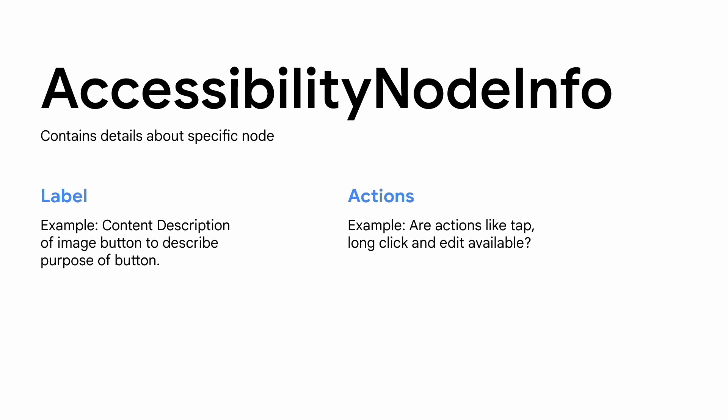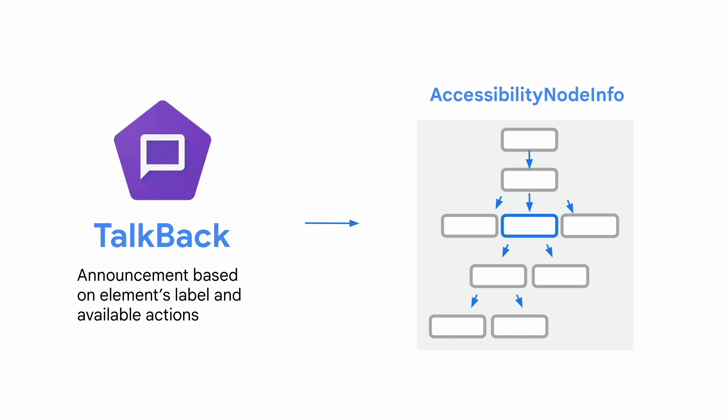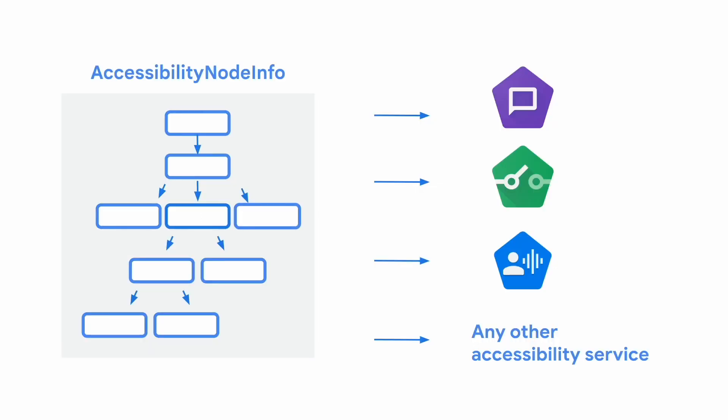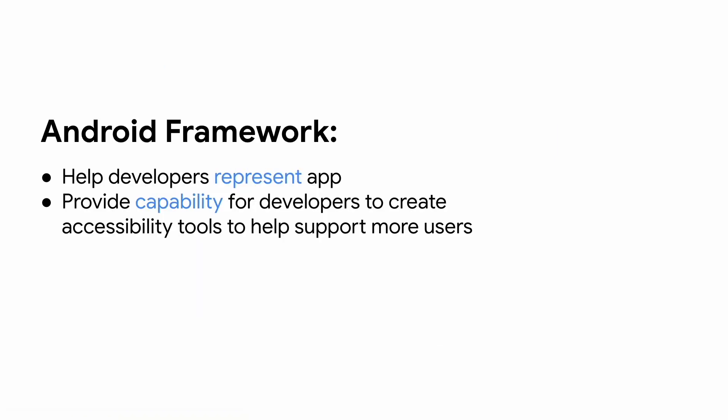You probably have never needed to think about Accessibility Node Info or the properties contained inside it, mostly because these properties are filled in automatically if you're using built-in components. The framework automatically populates the label text field for text elements and certain actions for specific widgets like switches or radio buttons. It's with all this information that TalkBack is able to make announcements based on the element's label and available actions. And because of all the info Accessibility Node Info contains, Accessibility Services are then able to navigate and interact with apps. Android Framework creates this tree to help developers represent their app for Accessibility Services, but also gives developers the capability to access the tree to create accessibility tools to support more users.